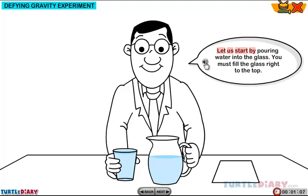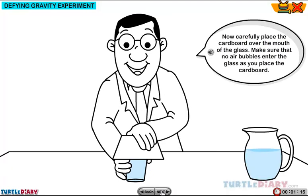Let us start by pouring water into the glass. You must fill the glass right to the top. Now carefully place the cardboard over the mouth of the glass. Make sure that no air bubbles enter the glass as you place the cardboard.